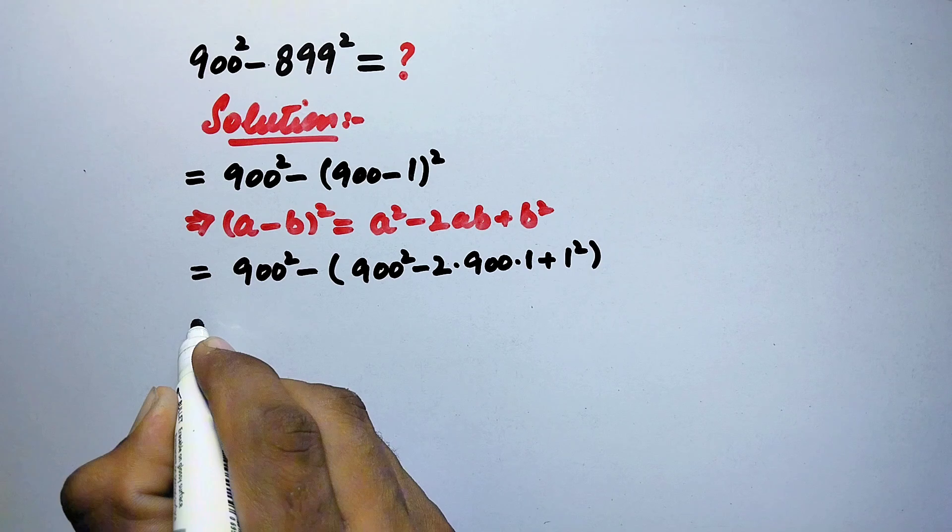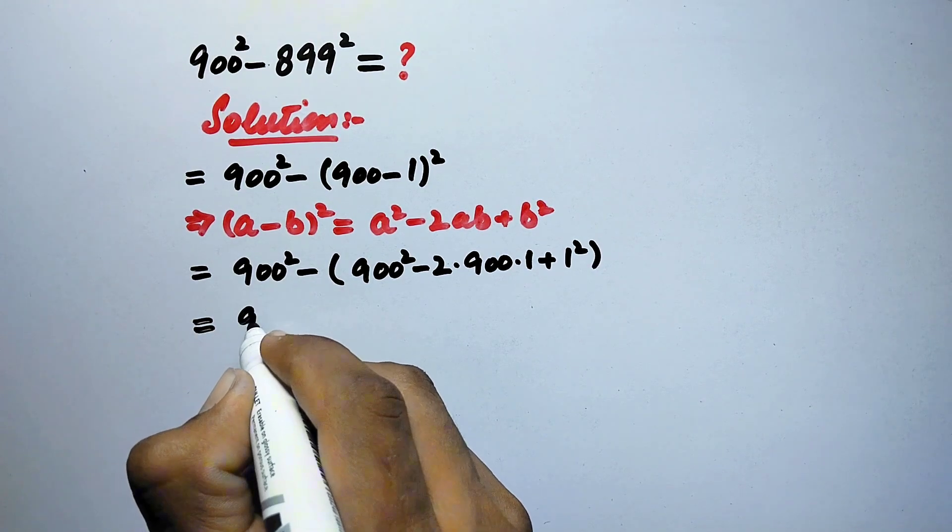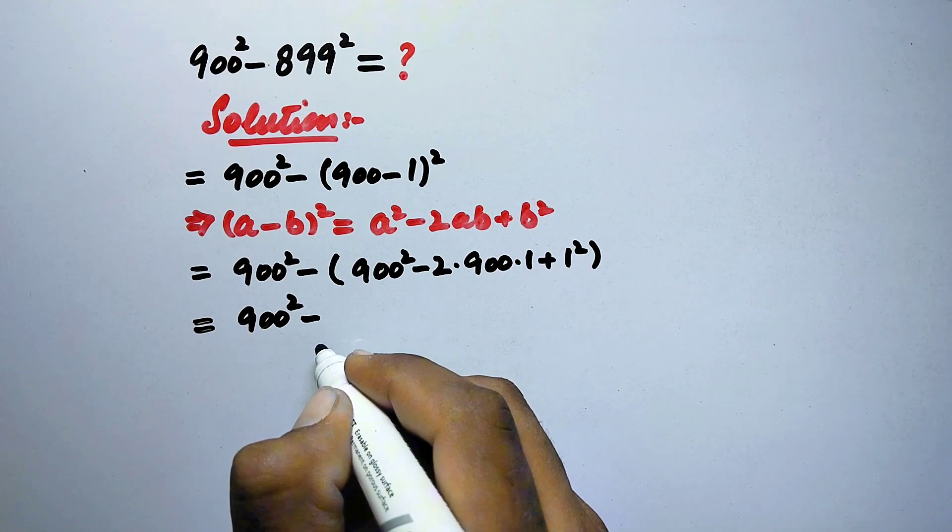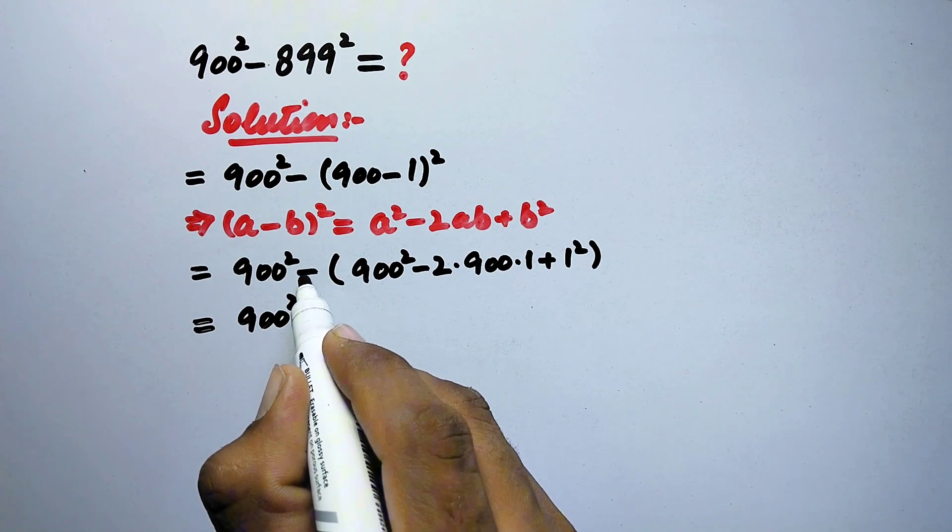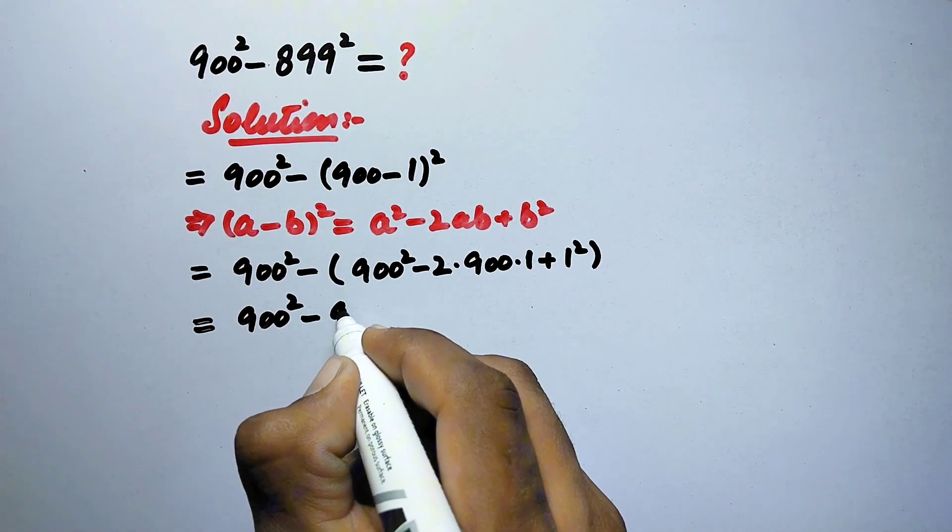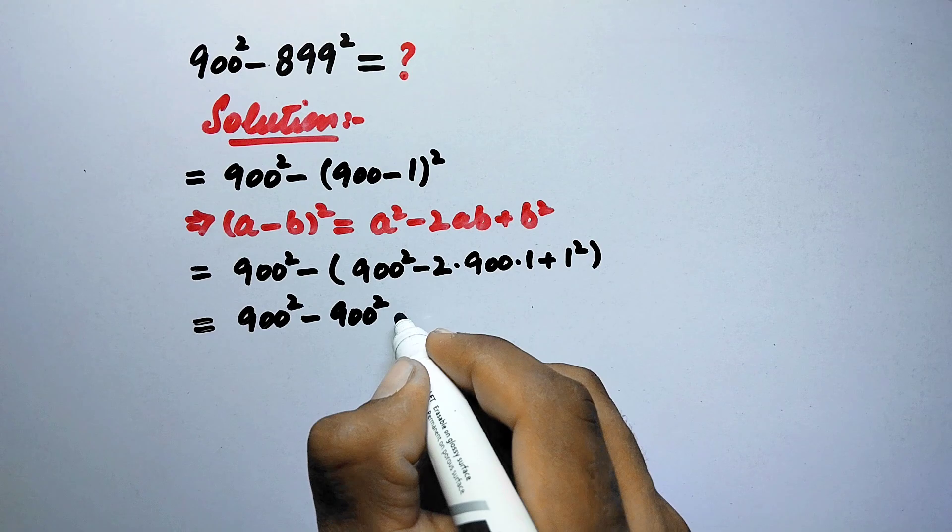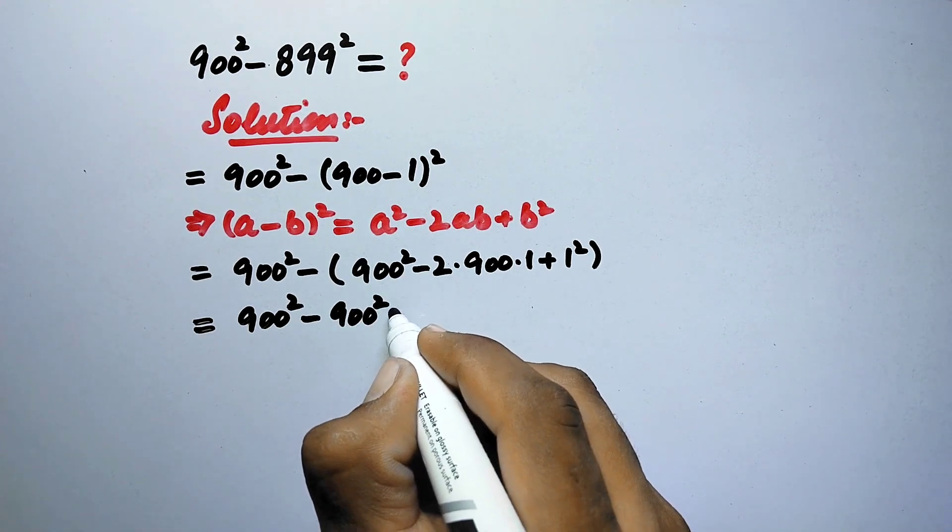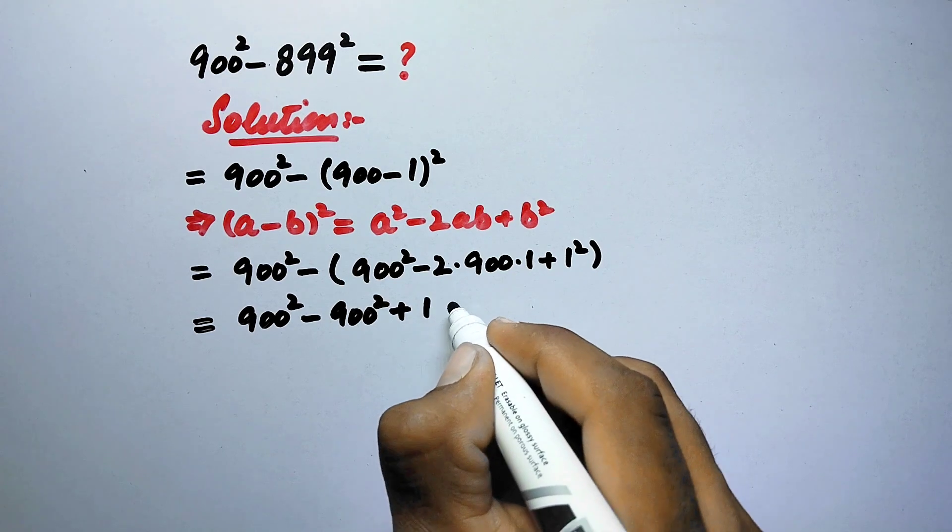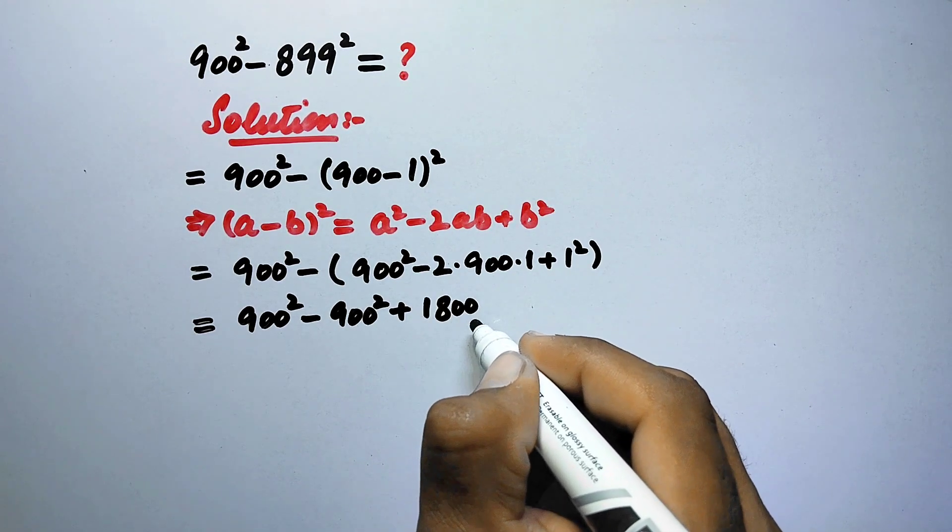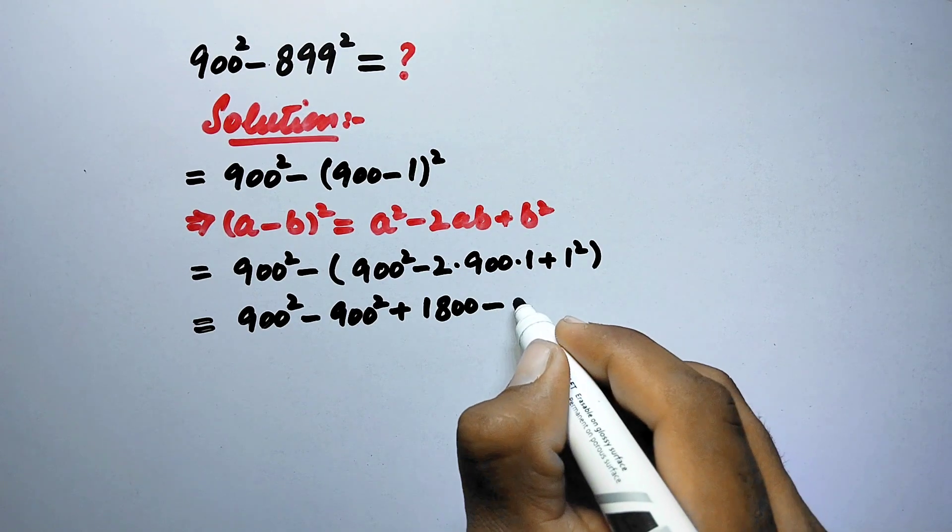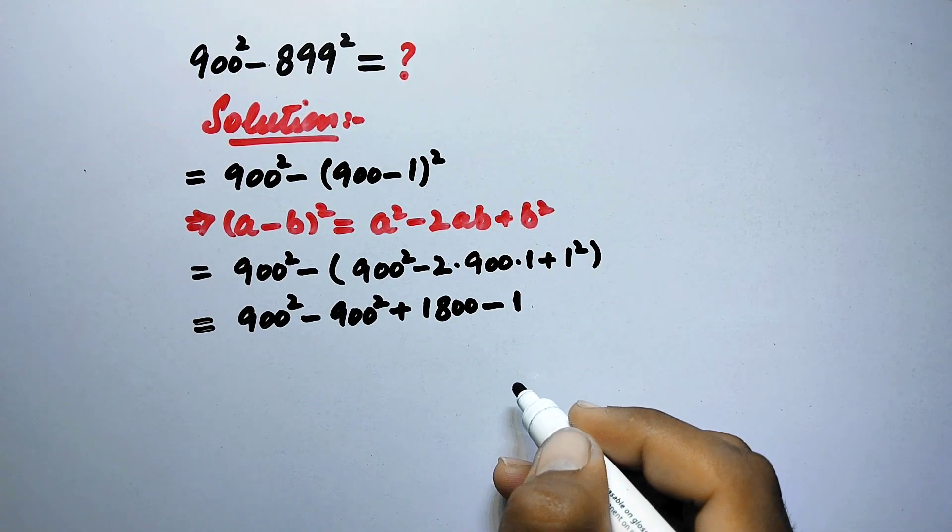Now here it will be equal to 900² minus... Now we will multiply this negative sign inside the bracket. So it will be -900² and minus times minus will be plus, 2 × 900 = 1800, and minus times plus will be -1, and 1² = 1.